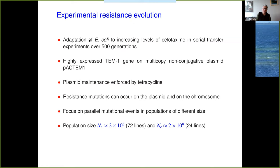These experiments looked at the adaptation of E. coli to increasing levels of cefotaxime in standard serial transfer experiments over 500 generations. These bacteria had the TEM-1 gene on a multi-copied but non-conjugative plasmid. TEM-1 doesn't do much against cefotaxime. In order to maintain the plasmid, there was also a tetracycline resistance gene on the plasmid, and tetracycline was in the media. Resistance against cefotaxime could evolve through mutations occurring either on the plasmid or on the chromosome, corresponding to different kinds of resistance mechanisms. Since we were interested in the effect of population size, these experiments were carried out at two different population sizes: 2×10⁶ and 2×10⁸.